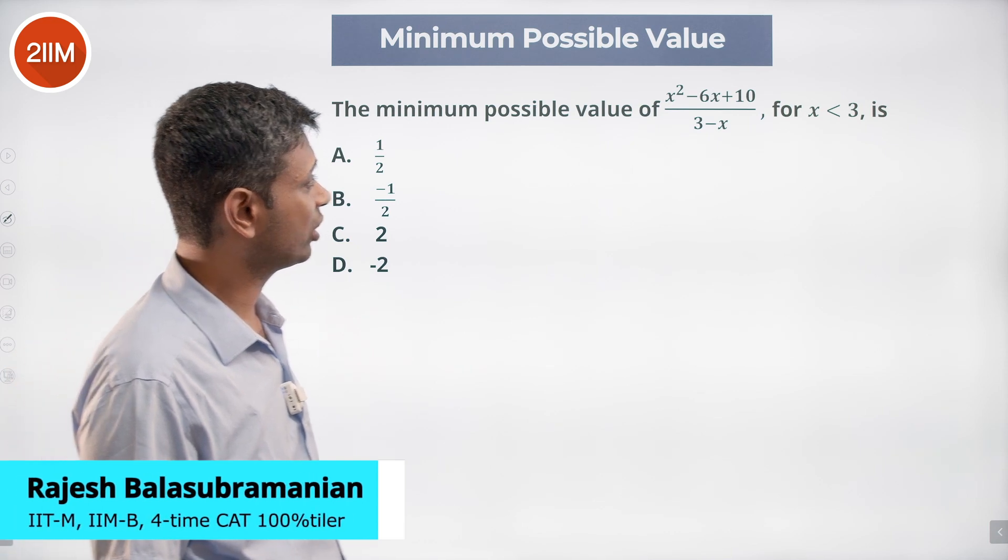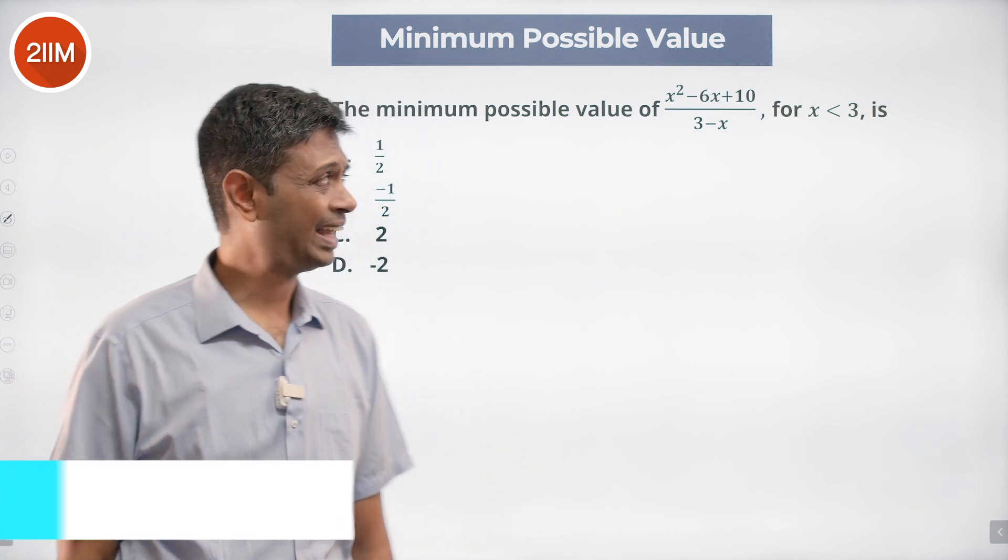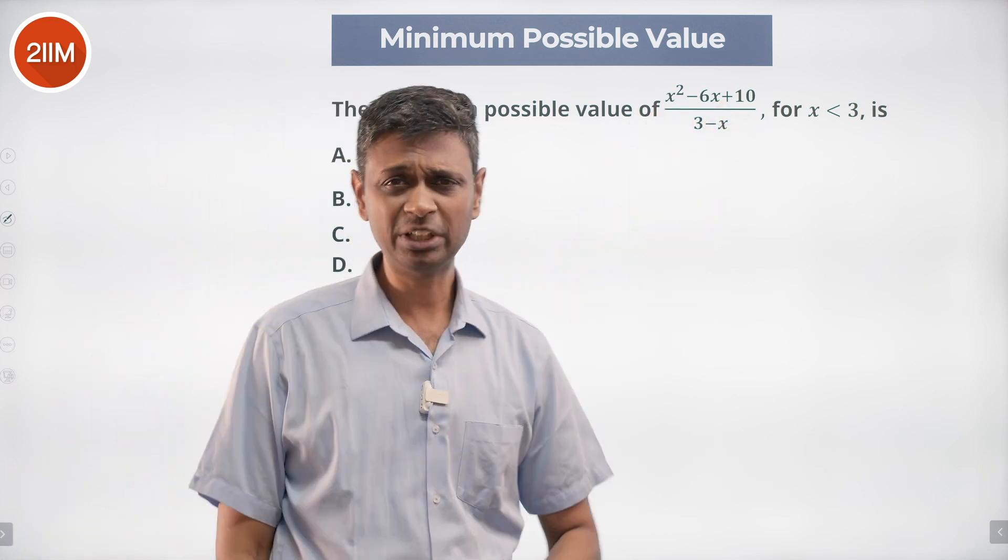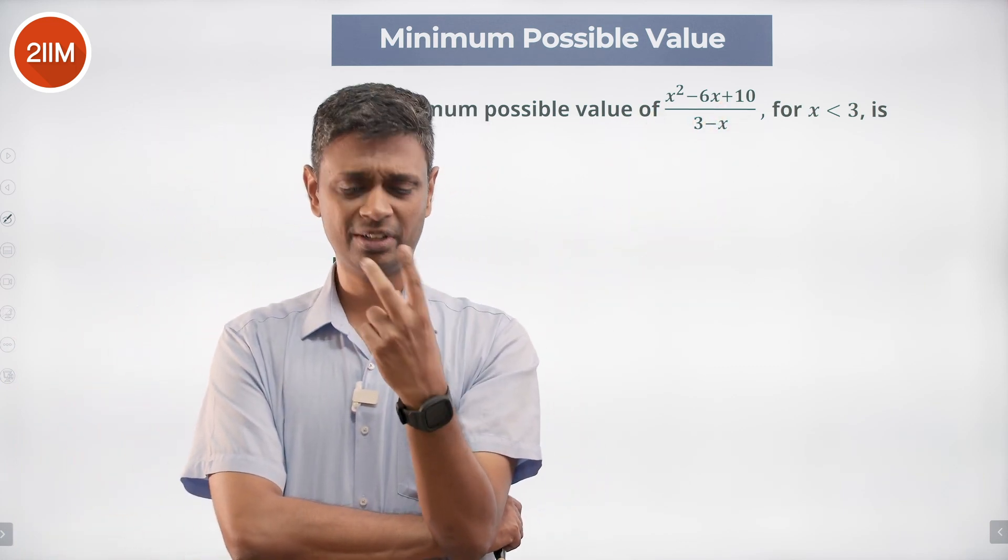The minimum possible value of (x² - 6x + 10)/(3 - x) for x < 3. This is a very nice question. This is not factorizable; factorizing is one trick, and quadratic equations are another trick.